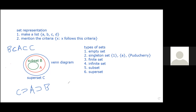Let's name the sets: the subset is B, the original set is A, and the superset is C. So A is a subset of C, and B is a subset of A. For the superset symbol, A is the superset of B, and C is the superset of A. A typical example: the set of odd numbers is a subset of natural numbers, which is a subset of integers (written with a double-stroke Z), which is a subset of real numbers. For shapes: squares are a subset of quadrilaterals, which are a subset of polygons.